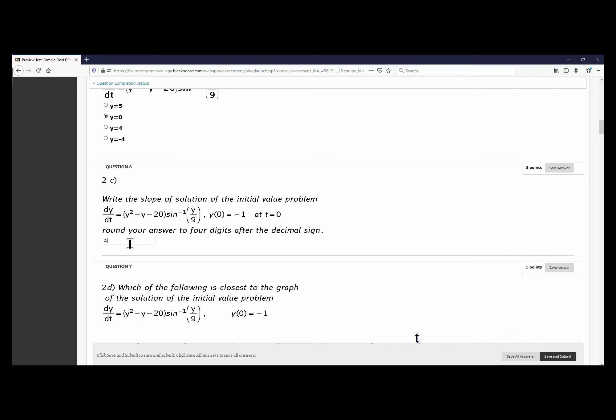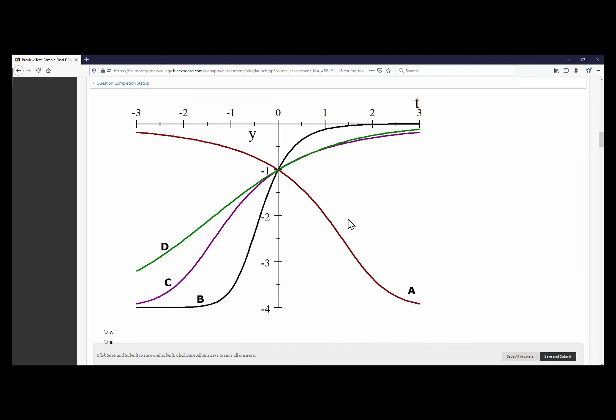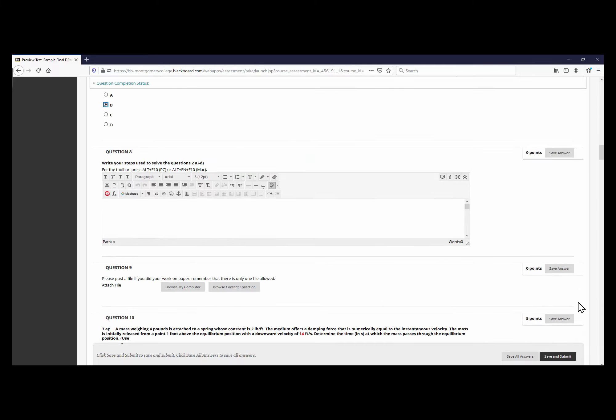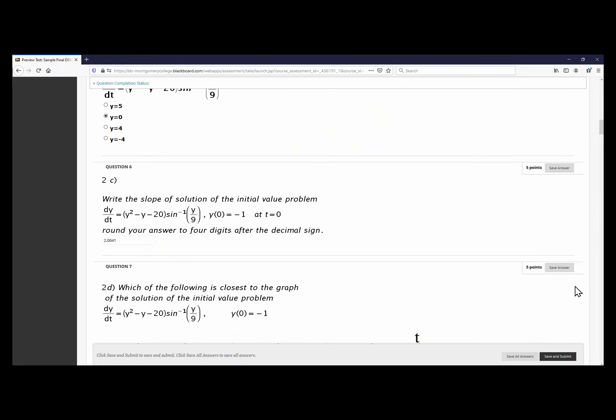And then what it says is that which of these is a solution, so there are four of them. This one has a negative slope at t equals 0, so that is out. And the slope is about 2, and you can check that this black graph is the only one that has a slope of about 2, which is labeled as B. So B is my answer. So I'll just go ahead and save it.